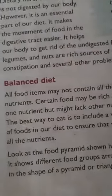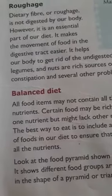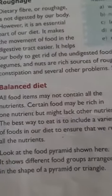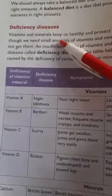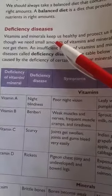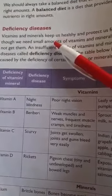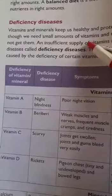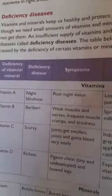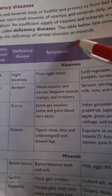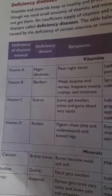A balanced diet is one where all the essential nutrients are present in our food in the right amounts. We have also seen deficiency diseases — these are caused because of the shortage of any nutrient. An insufficient supply of vitamins and minerals in our body may cause deficiency diseases.